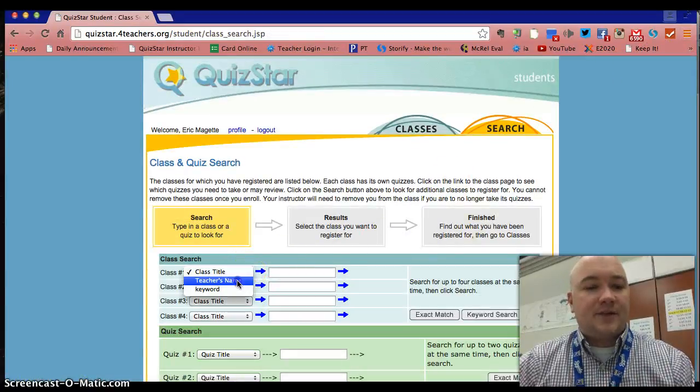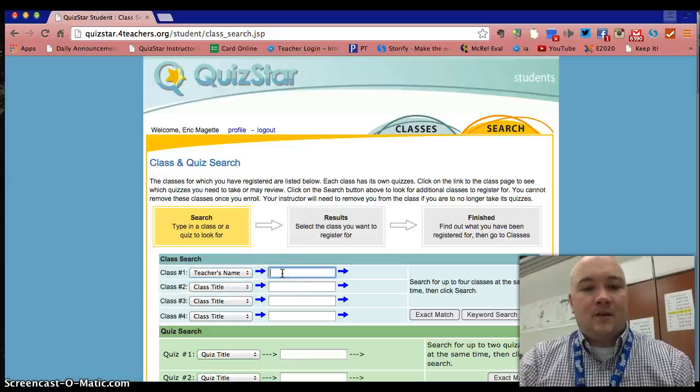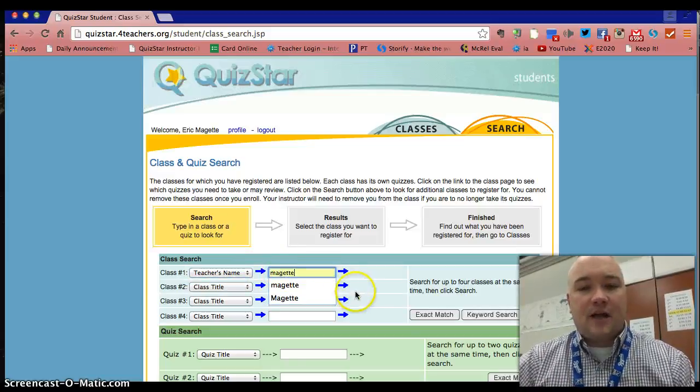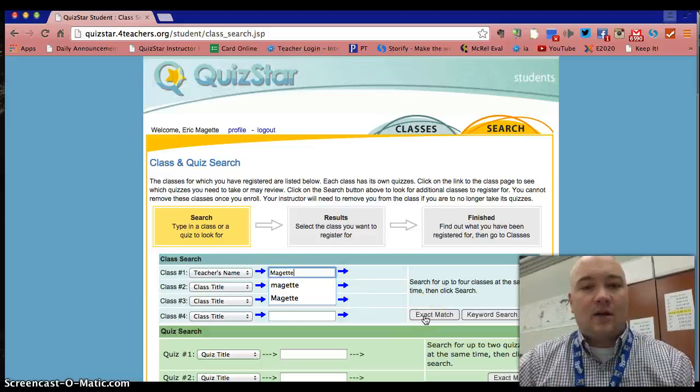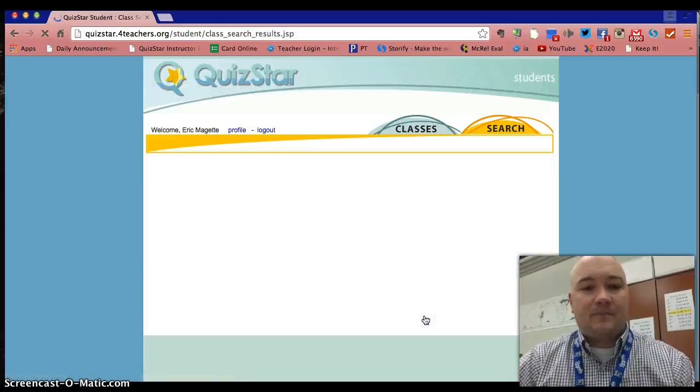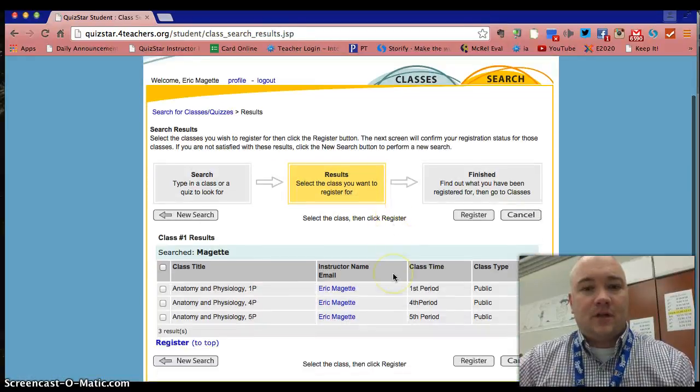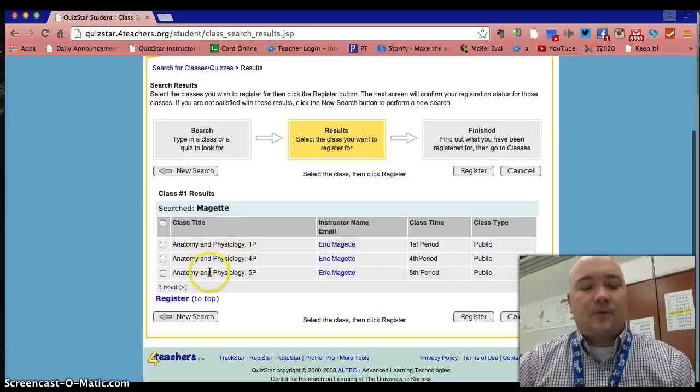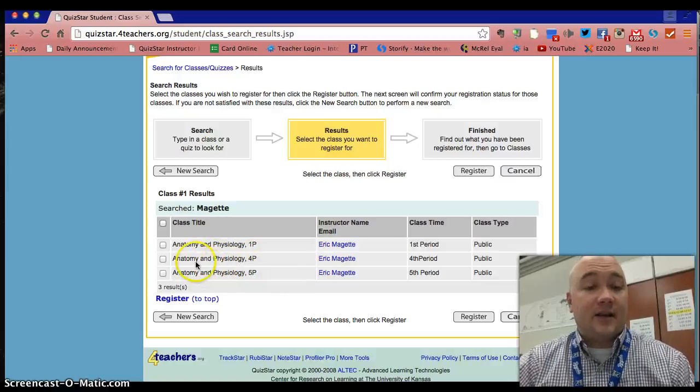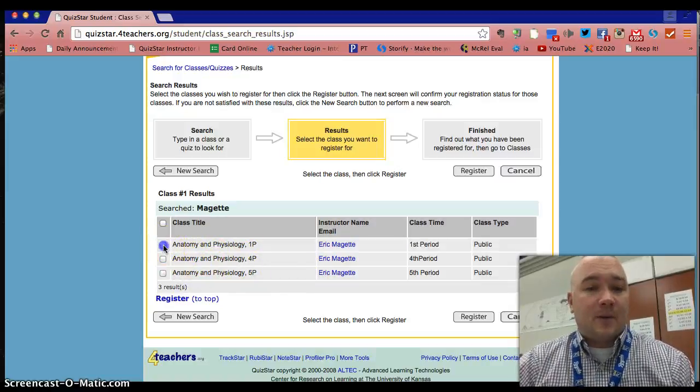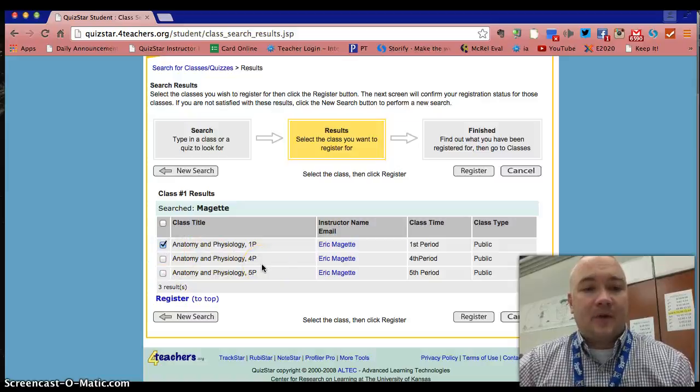I'm going to search by teacher's name, and you're going to search by my name, Majette. I want an exact match, and that should pull up three classes: first period anatomy, fourth period anatomy, and fifth period anatomy. From here, you're just going to select whichever class you belong to. So if I am a member of first period anatomy, I'm going to click that box and register.